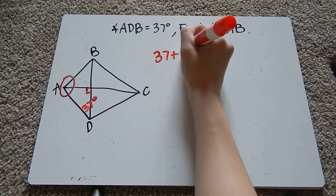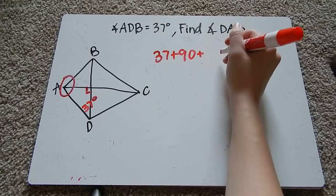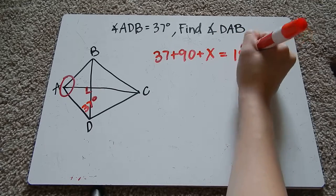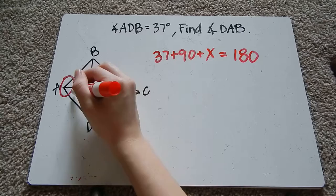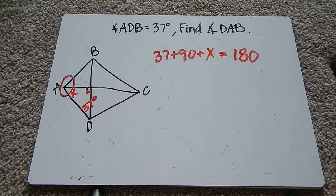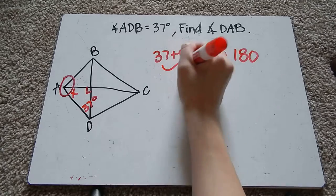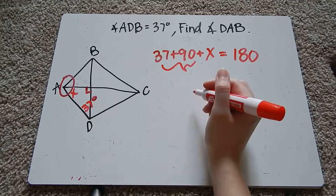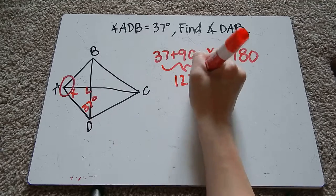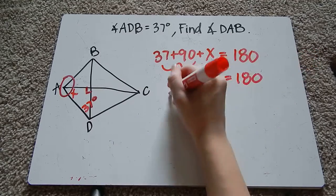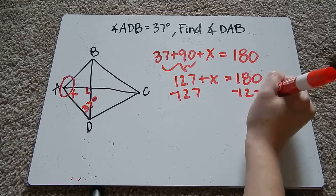So I can find this angle pretty easily because this is a triangle. So 37 plus 90 plus I'm just going to call it x equals 180 because there are 180 degrees in a triangle. So that's x, that's what I'm solving for. So we'll go ahead and add 90 plus 37 is 127. Subtract 127 from both sides.